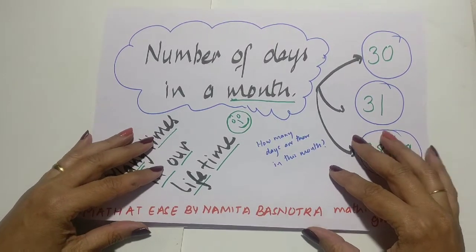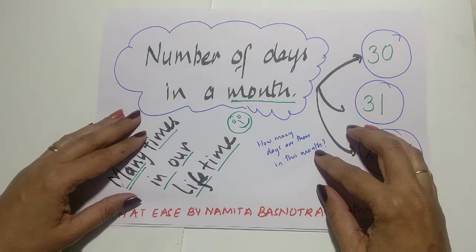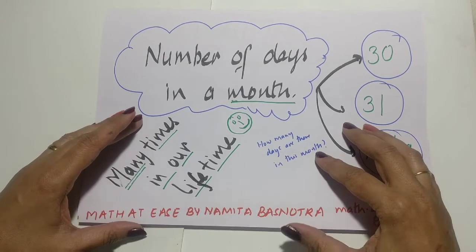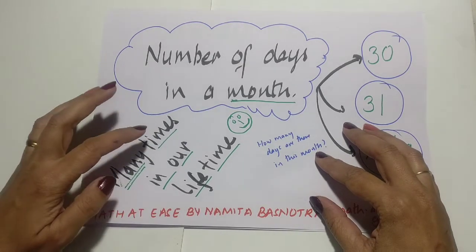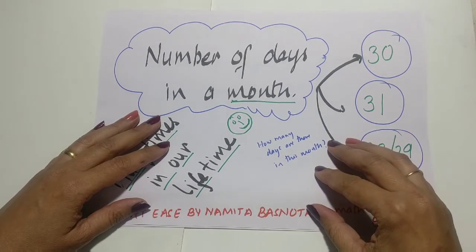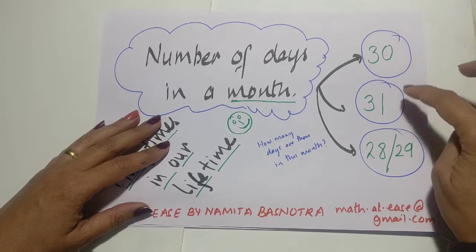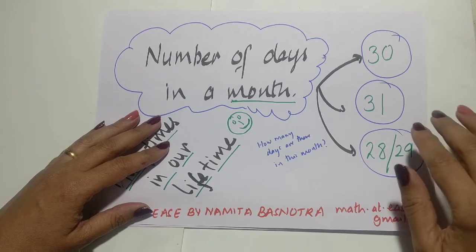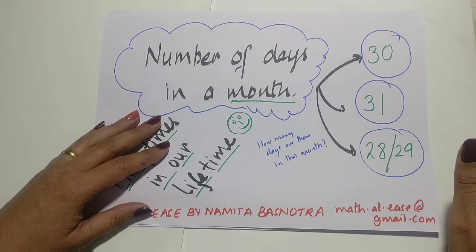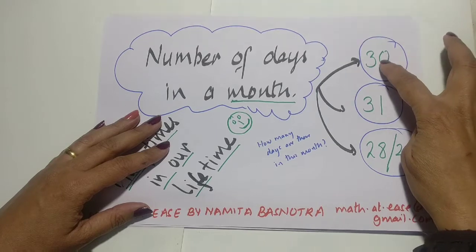Hello friends, today I have come up with a new trick for you — a trick about the number of days in a month, which is something you are going to use many times in your lifetime. Whenever a question is asked, three answers pop up in our minds: 30, 31, 28, and 29. Then the mind quickly says 28 or 29 is February.